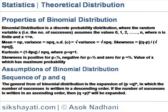Mean is equal to np. Variance is equal to npq. Standard deviation sigma is equal to the square root of variance, which equals root npq. Skewness is equal to (q minus p) divided by root npq. Kurtosis is equal to 1 minus 6pq divided by npq, where p plus q equals 1.